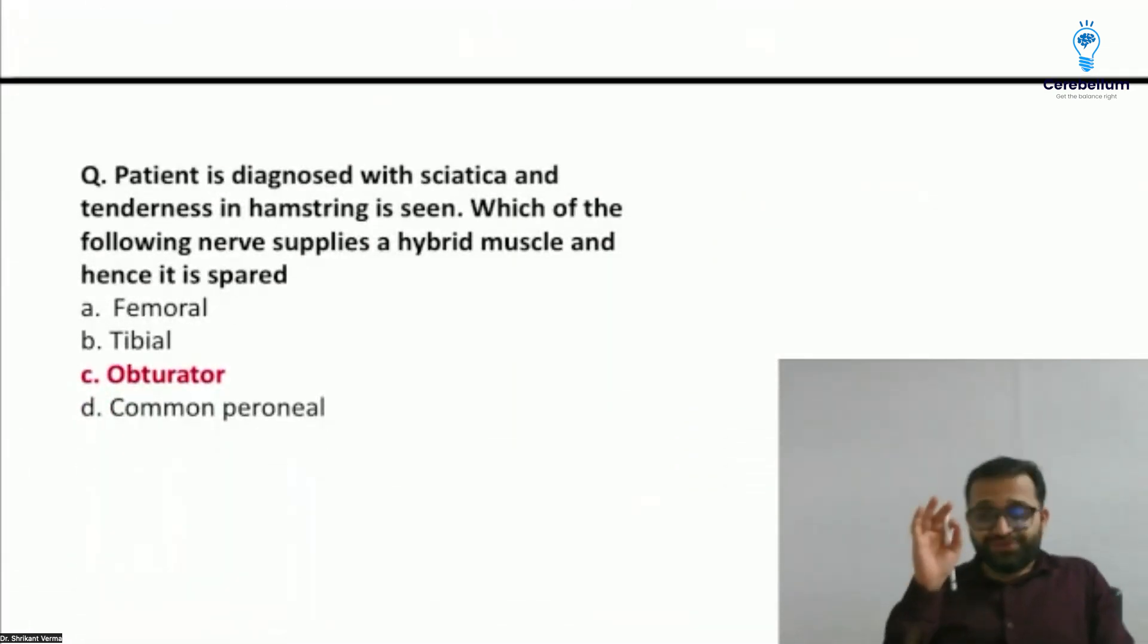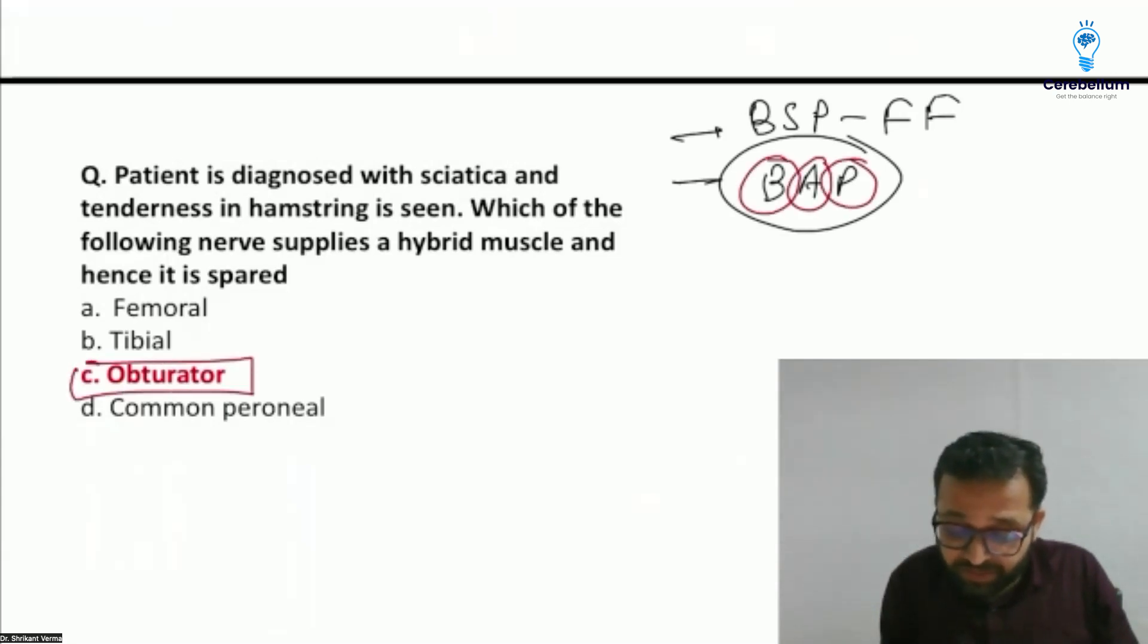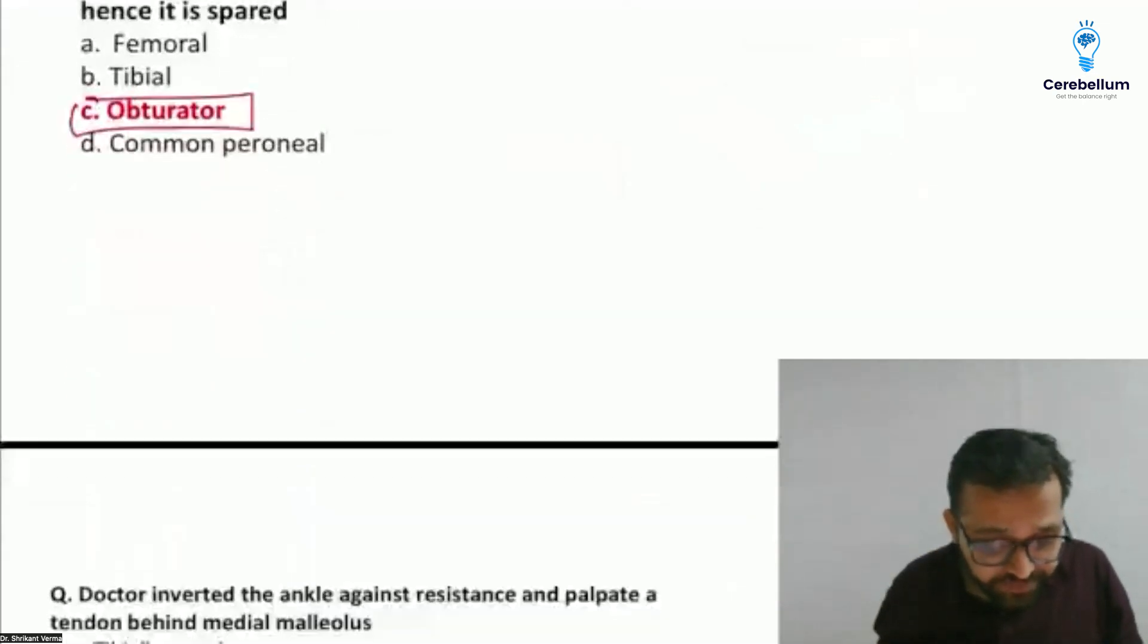Now come to the next question. This is our very favorite question we had seen with the song. Remember the hybrid muscle of the lower limb - biceps femoris, adductor magnus, and pectineus. This was the mnemonic for the upper limb hybrid muscle. Adductor magnus is supplied with double nerve which is having the obturator nerve supply. It is the muscle of the hamstring, so answer is the obturator nerve.